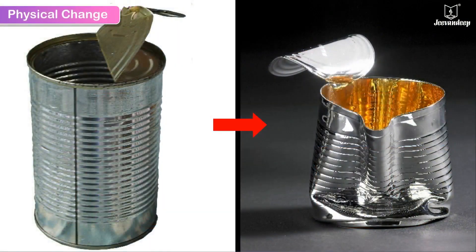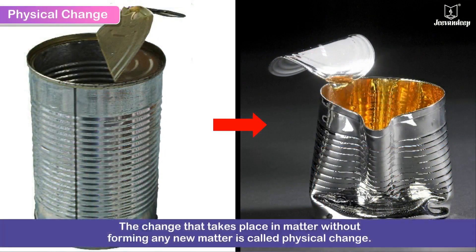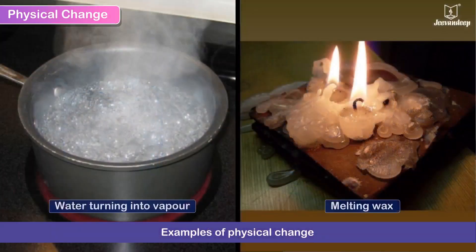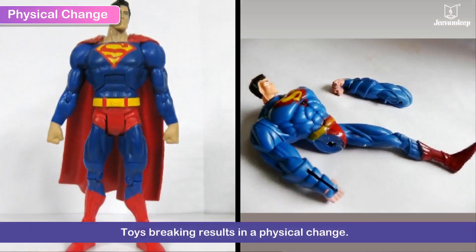Physical Change. The change that takes place in matter without forming any new matter is called a physical change. The substance, however, changes in its appearance and or state. Water turning into water vapour and melting of wax on heating are examples of physical change. Breaking of toys also results in a physical change.